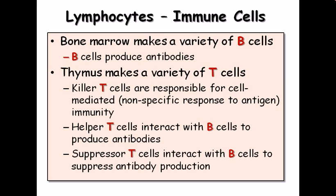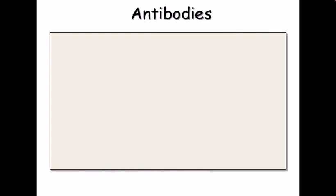There are also suppressor T cells, which interact with B cells to suppress antibody production. This is important because continuously producing antibodies would be wasteful — antibodies are needed only during infection. When we don't have an infection, we don't need large amounts of antibody, so suppressor T cells stop that production.